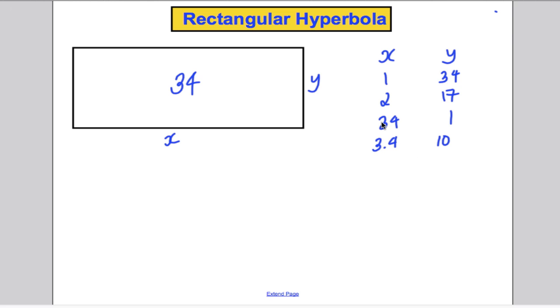It could even be, all of these numbers, the negative of both. It could be, not with length, I understand, there's no such thing as negative length. But if I was extending the idea to what two numbers multiply to 34, it could be -1, -34, -2, -17, -34, -1, -3.4, -10.